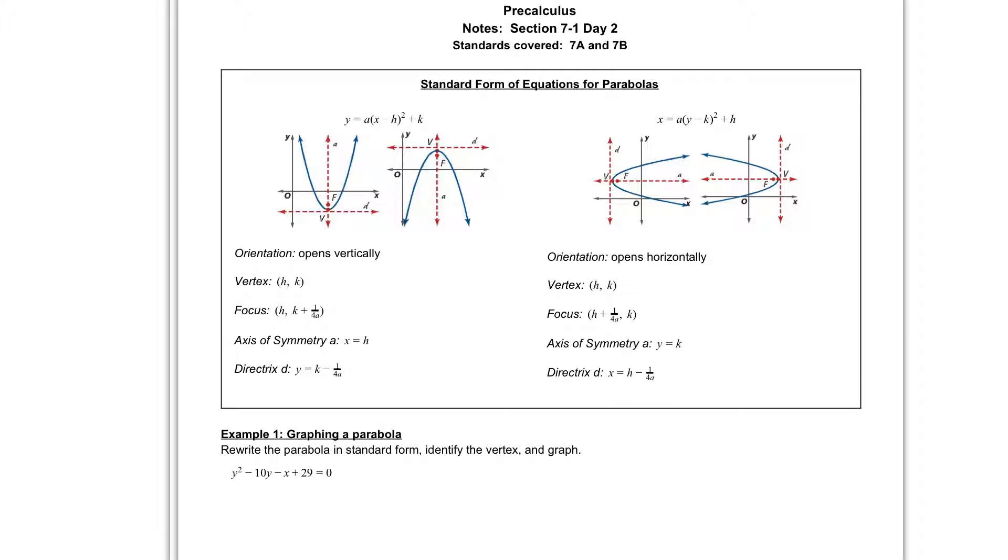So if we take a look at our focus, we have either h, k plus 1 over 4a, if we have a y equals parabola. If we have an x equals parabola, our focus is h plus 1 over 4a, k. So we need to first figure out if we have a y equals or an x equals. So let's take a look at that real quick.